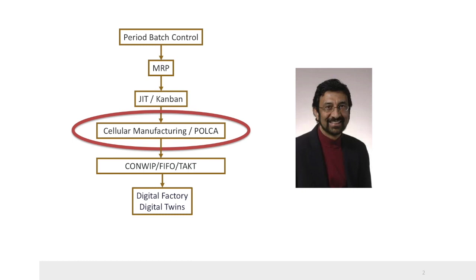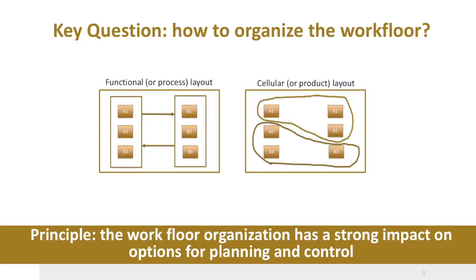Let us first discuss the organization on the work floor. In literature, we can find two major layout types for high variety, low volume manufacturing companies. First, the traditional functional layout, where machines are organized on the work floor according to their processes — we may have a welding department, a punching department, and a machining department. Parts move from one department to another according to the processes needed in the routing of their parts. In a cellular layout, machines are organized in autonomous units, each able to process complete parts which need the same processes. Basically, we created mini factories at the work floor.